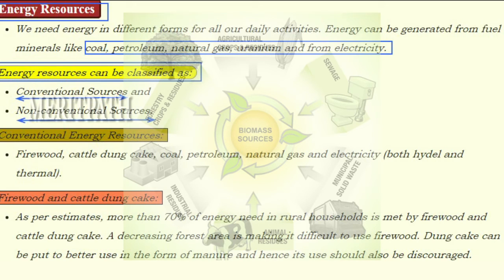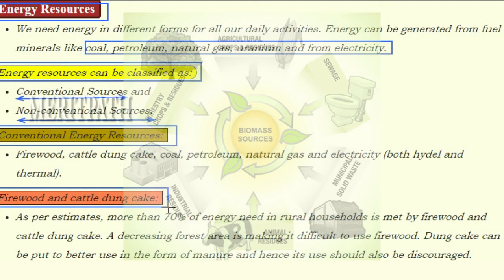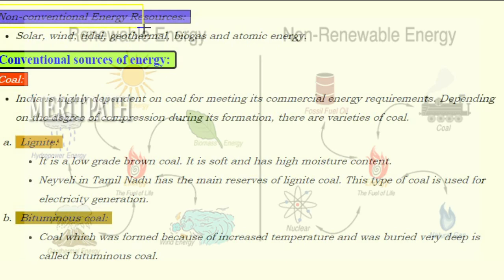Conventional energy resources include firewood, cattle dung cake, coal, petroleum, natural gas, and electricity (both hydel and thermal). More than 70 percent of energy needed in rural households is met by firewood and cattle dung cake. A decreasing forest area is making it difficult to use firewood, and dung cake can be put to better use as manure, so its use should be discouraged.